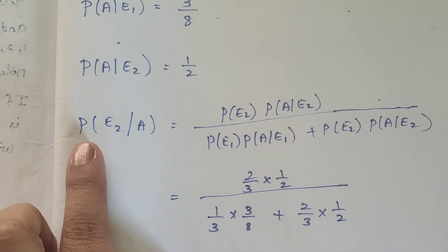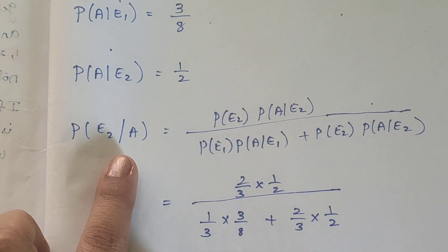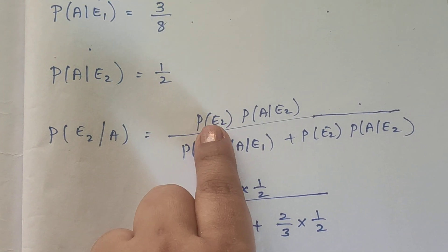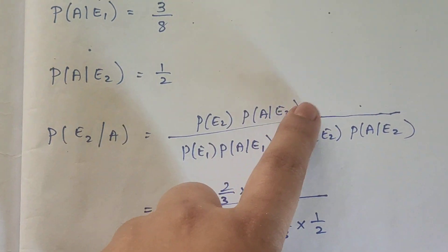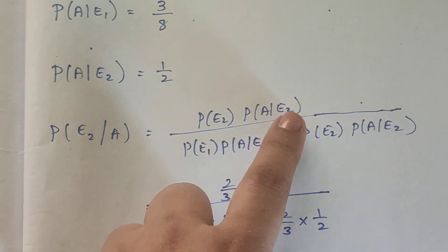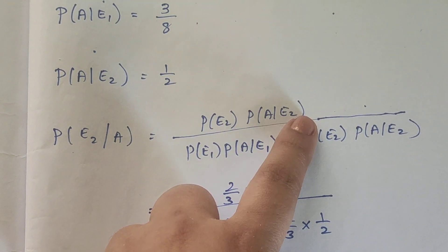We need to find P of E2 given A using Bayes theorem.